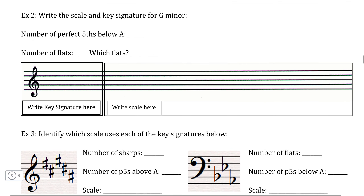Now, the obvious question is: does this work for flat keys as well? Well, let's test that out right now. So in this case, we're looking for the key signature of G minor, which is a flat key. So here we would be counting perfect fifths below A. So if we count backward — A, G, F, E, D — this means that D minor is going to have one flat. And if we count backwards from D — D, C, B, A, G — because we have counted down two perfect fifths from A minor in order to get to G minor, this means that G minor is going to have two flats in its key signature.